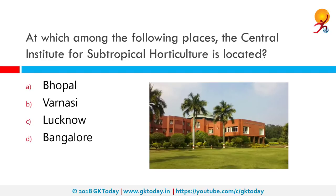At which among the following places is the Central Institute for Subtropical Horticulture located? The Central Institute of Subtropical Horticulture was started as the Central Mango Research Station on 4th September 1972 and renamed as the Central Institute for Subtropical Horticulture on June 14, 1995. It serves the nation on different aspects of research on mandated subtropical fruits. It has two experimental farms — one at Rahman Khera, approximately 25 km from the city, and the other at Rai Bareli Road in Lucknow.